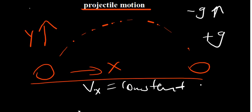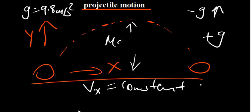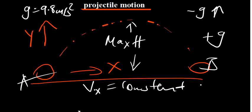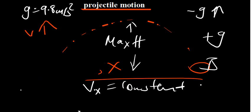In going up, we're going to consider gravity to be negative, and when coming down, we're going to consider gravity to be positive. Our gravity value that we're going to be working with is 9.8 meters per second squared. There are some equations that are very important that help us determine things like the maximum height, the time it takes to reach a maximum height, and the time of flight — the time that it will take from the launch point to the end. This basically is projectile motion in its symmetrical form.